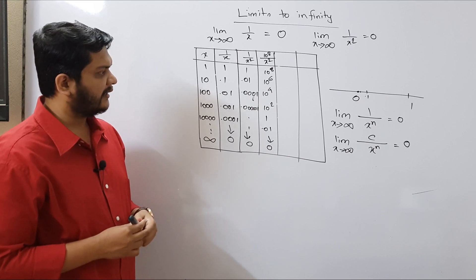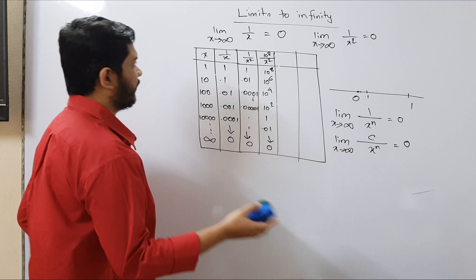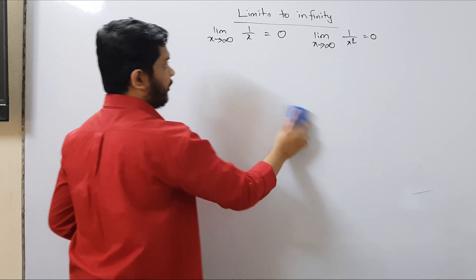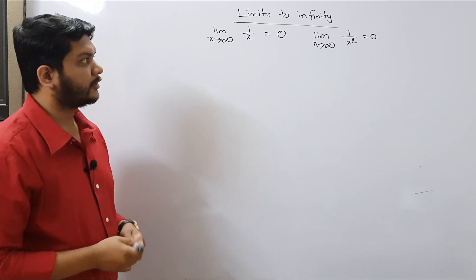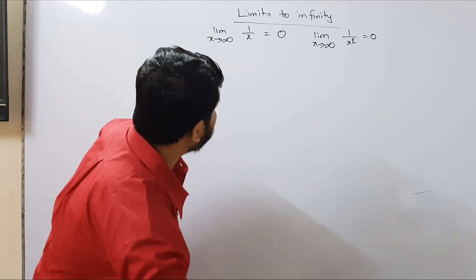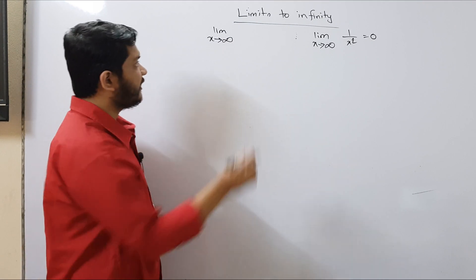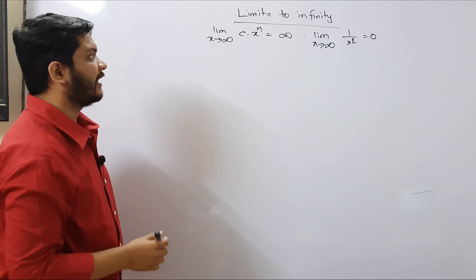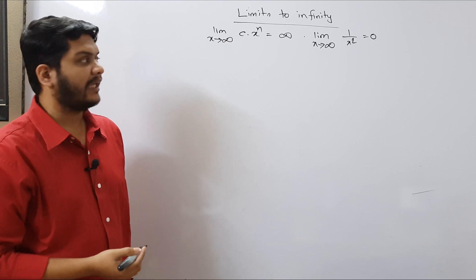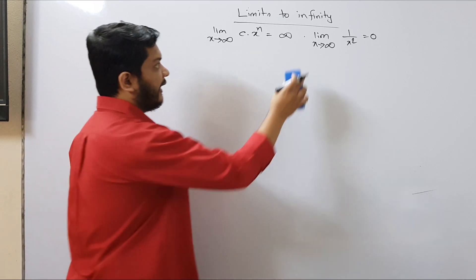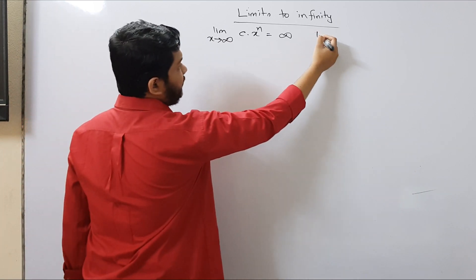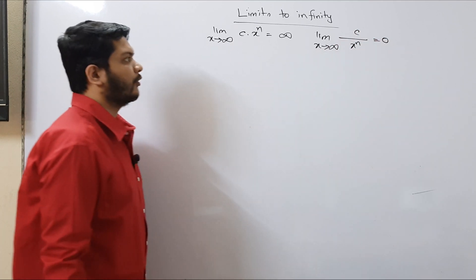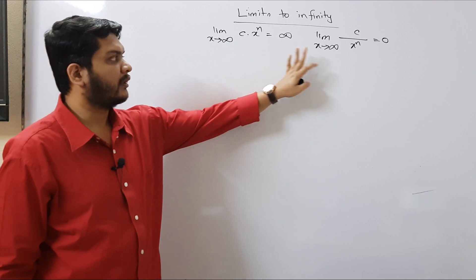So far we have reached two conclusions: limit x tends to infinity of c times x to the power n equals plus infinity for positive c and minus infinity for negative c. And limit x tends to infinity of c divided by x to the power n equals 0. I hope this is clear.